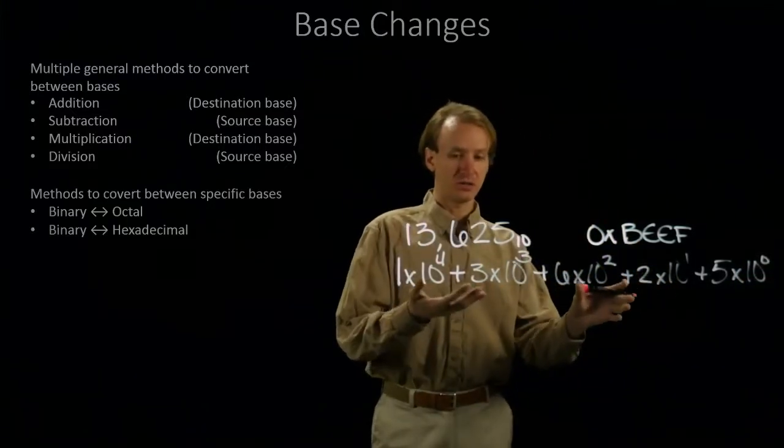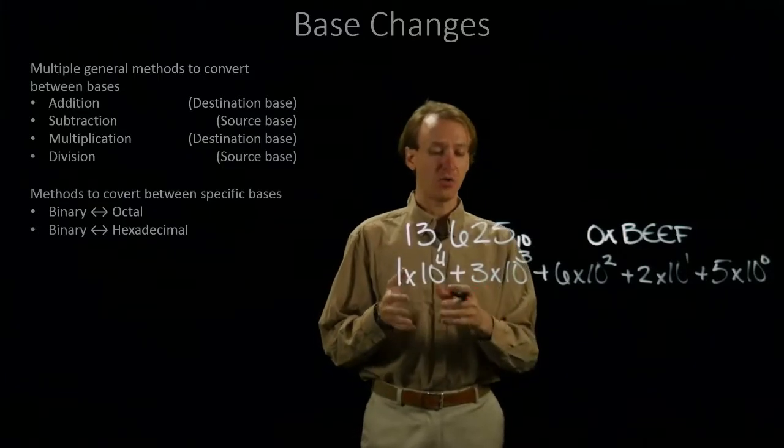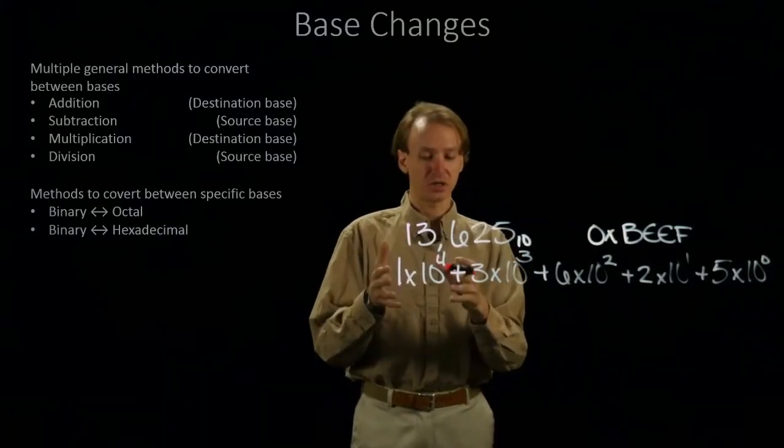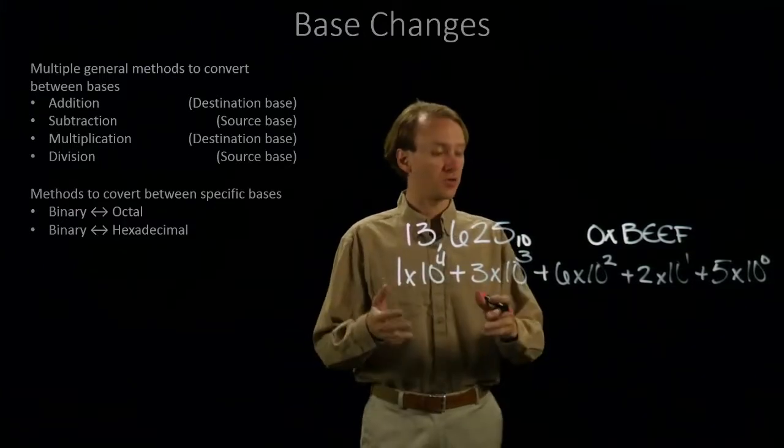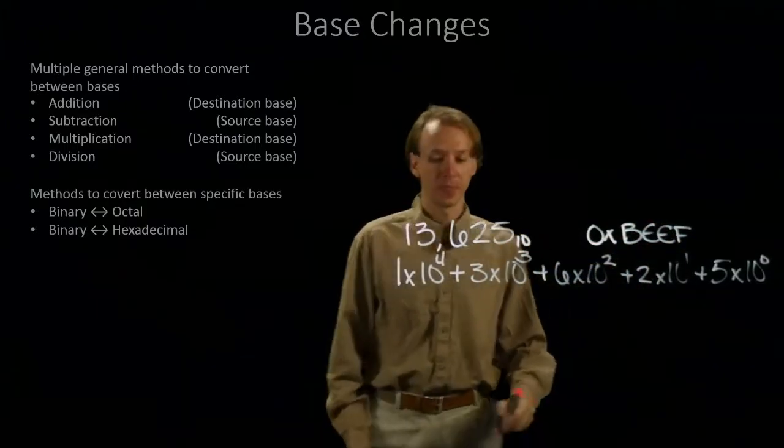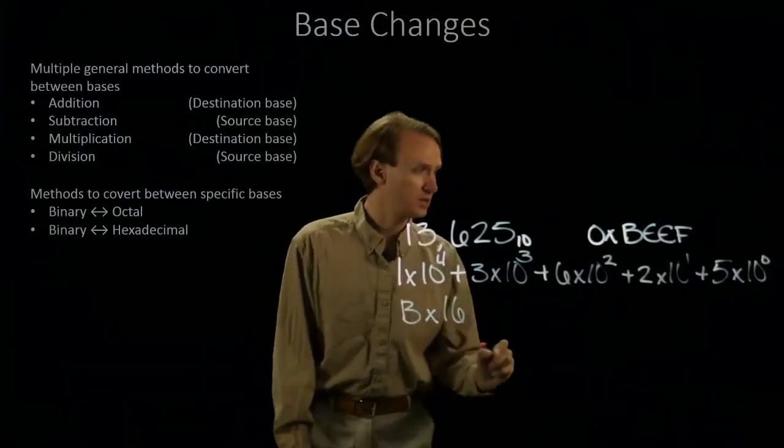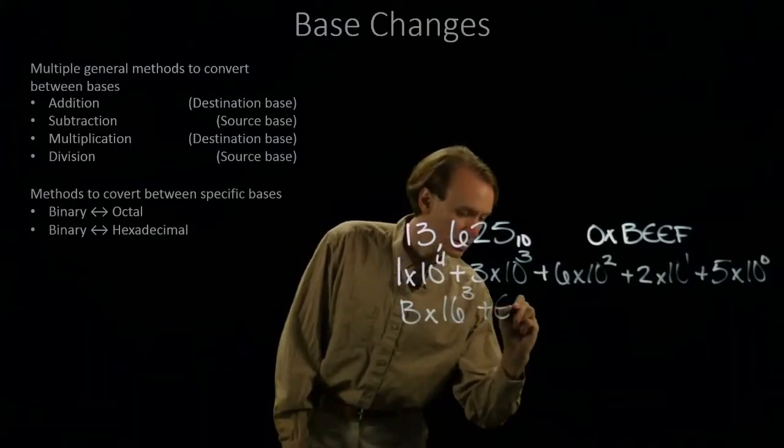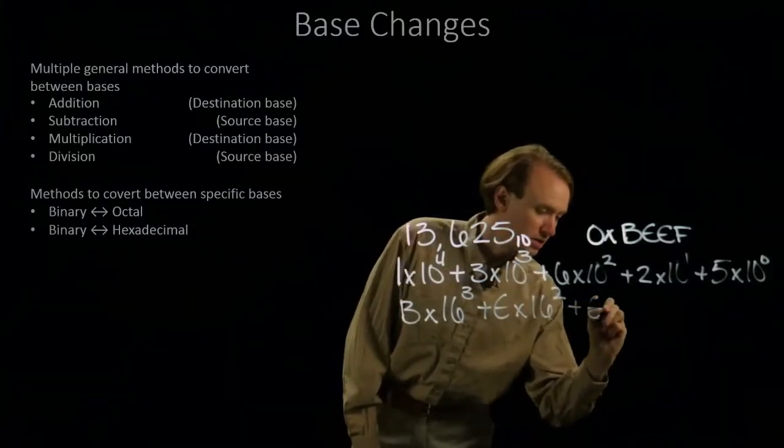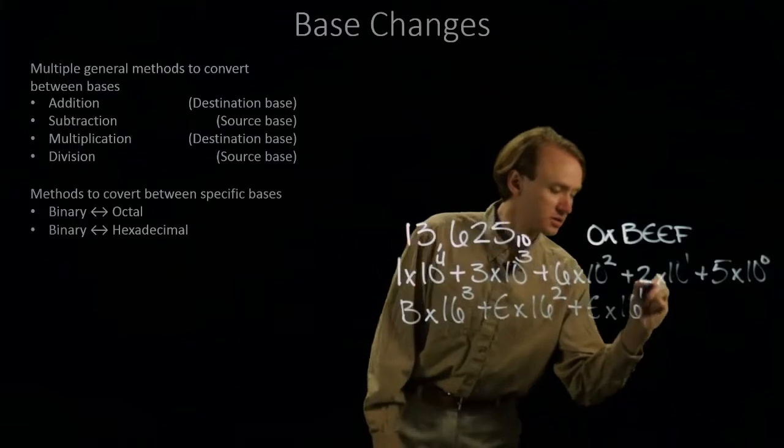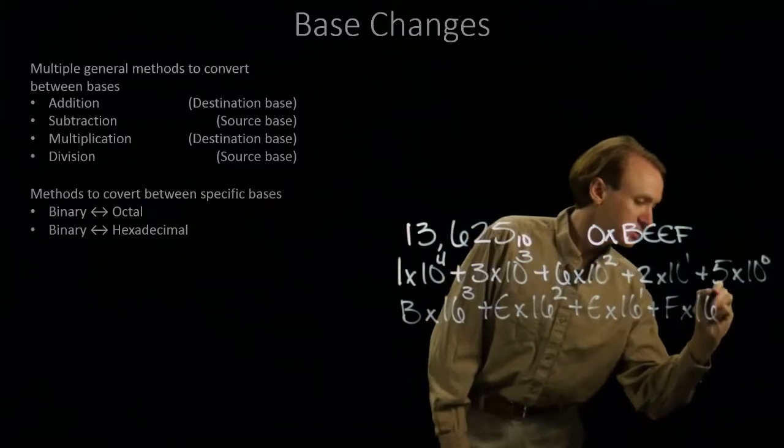This expression is exactly the same thing as this, but now I've made everything very explicit. And it's going to be a whole lot easier to convert between this expression and a corresponding expression in a different base. I can, of course, repeat the same process for, say, beef over here, where I have b times 16 to the 3rd, plus e times 16 squared, plus e times 16 to the 1st, plus f times 16 to the 0th.